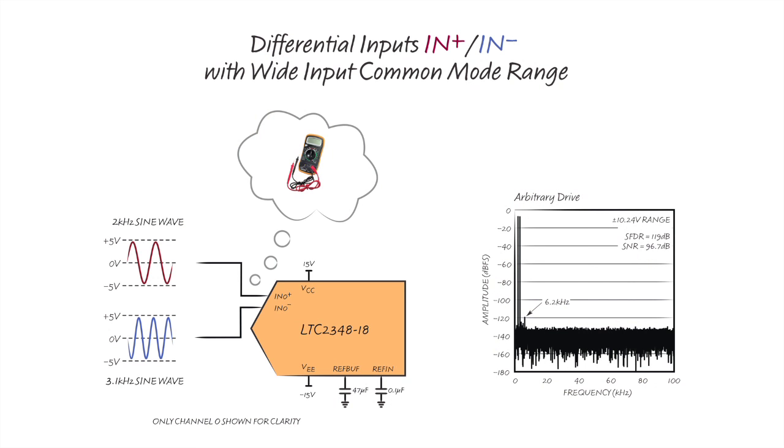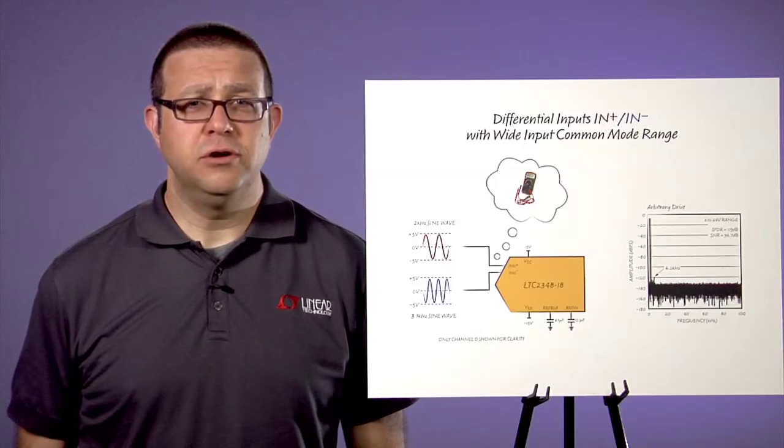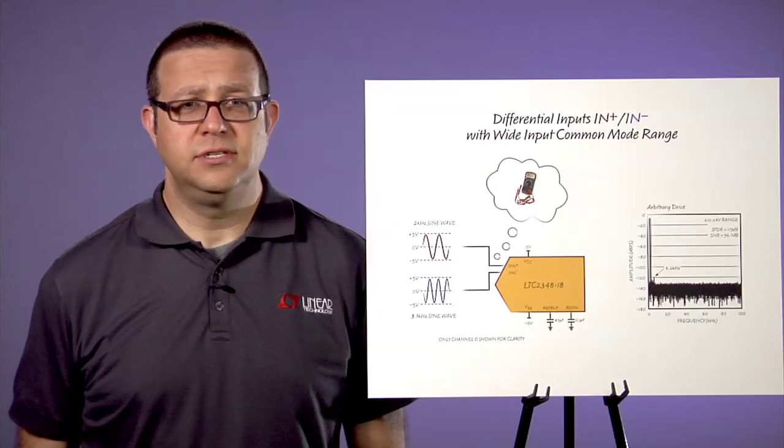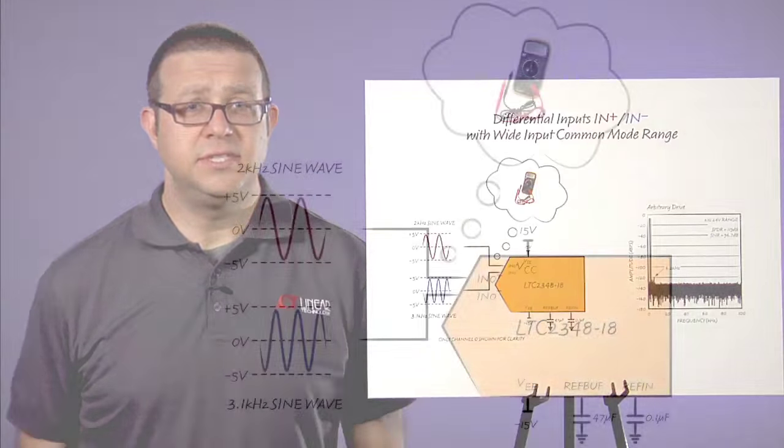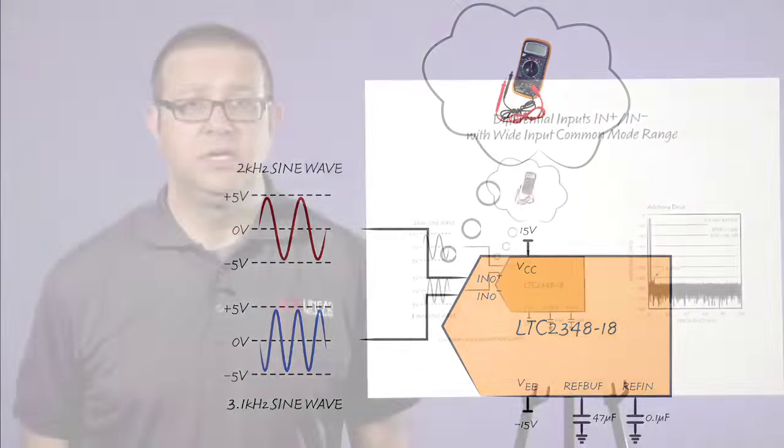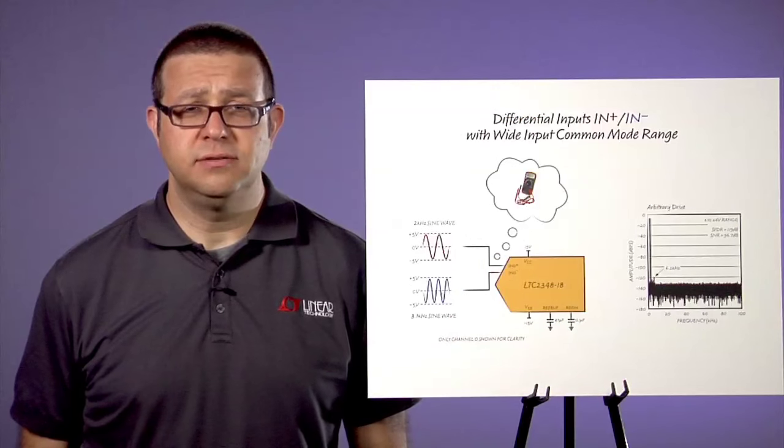The converter's analog inputs are differential with wide input common mode range. Simply translated, the positive and negative input pins are allowed to swing with an arbitrary relationship to each other. To visualize the benefit in your application, you can picture using the converter to measure time varying voltage differences between any two points in your system in much the same way you use a standard benchtop voltmeter to measure DC voltage differences. This can greatly simplify the signal conditioning required between your signals and the converter.